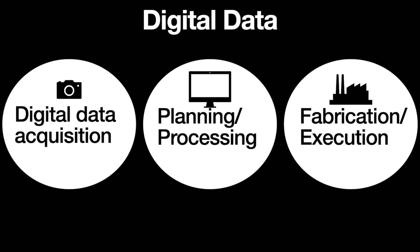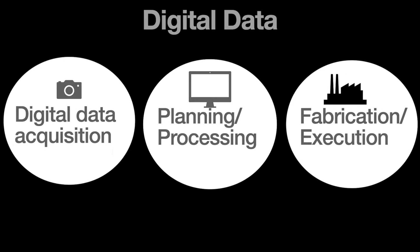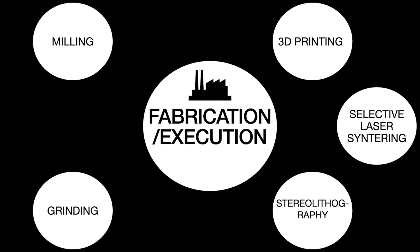The last step with digital data is fabrication and execution. In these steps we use milling — for example, milling PMMA crowns and bridges for restoration. We can use grinding machines to grind zirconia crowns. 3D printing, starting from small chairside printers for models, up to larger printers for guides and temporary restorations. Selective laser sintering — printing in chromocobalt or titanium — to make superstructures for implants. Stereolithographic printing for very high-quality surgical guides.